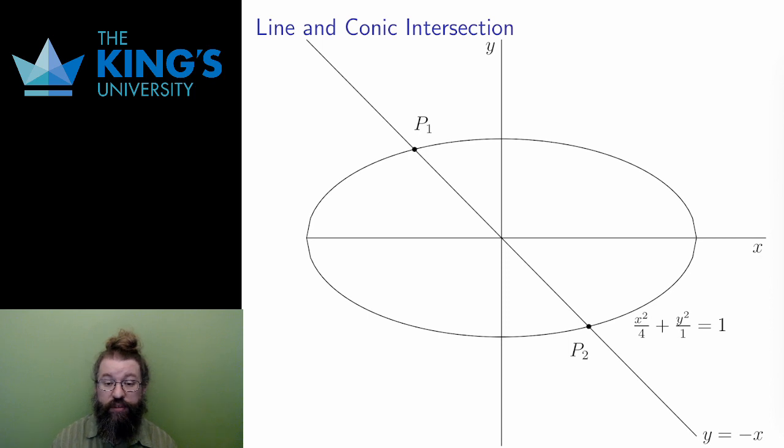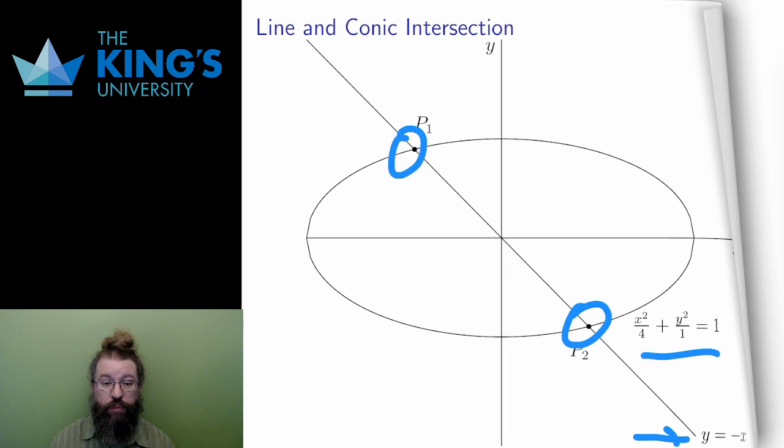Now I'll do another example, this time with a line and a conic. Here's the ellipse x squared over 4 plus y squared over 1 equals 1, and the line y equals negative x. Visually, it looks like there should be two intersection points. I will use algebra to calculate the coordinates of these two points.